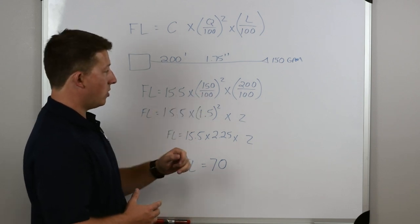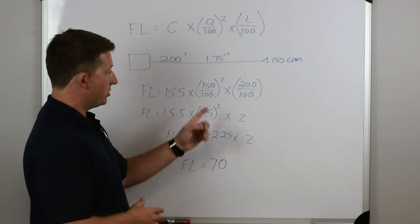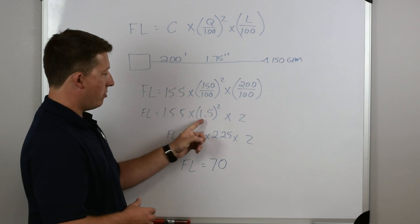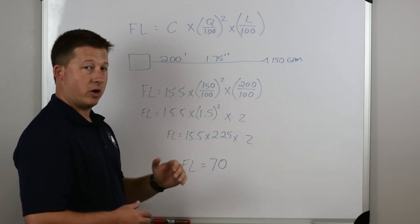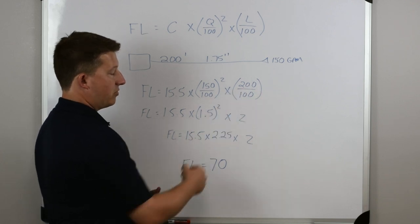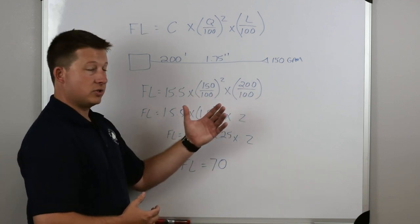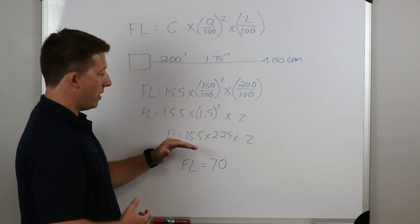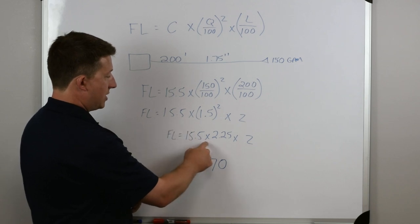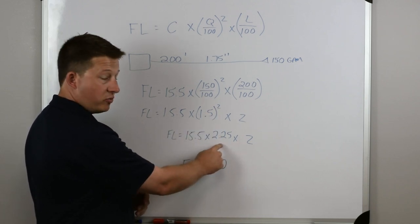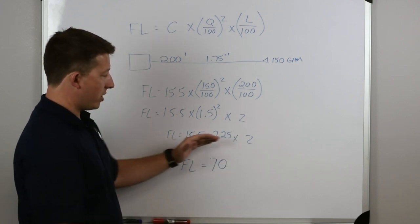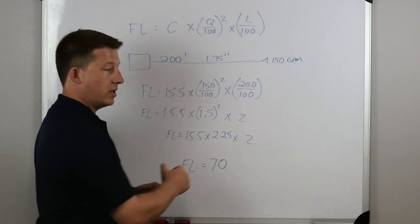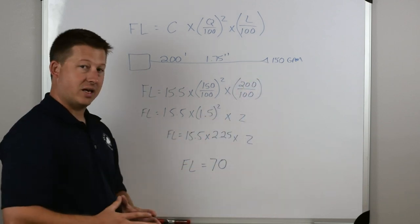The quantity of water is 150 GPM, so we use 150 divided by 100, which is 1.5, and then square it to get 2.25. The length of hose is 200 feet, which divided by 100 is 2. Simplifying the full problem: 15.5 times 2.25 times 2. Working that out gives us a total friction loss from the pump to the nozzle of 70 psi.